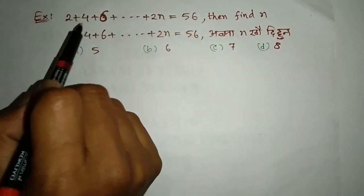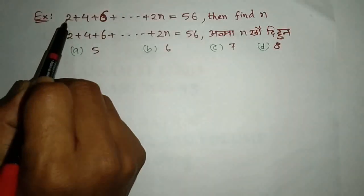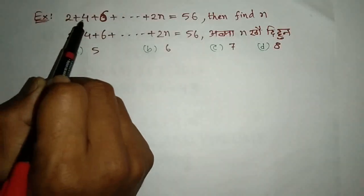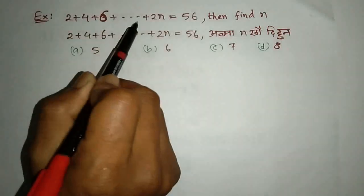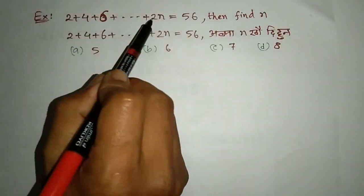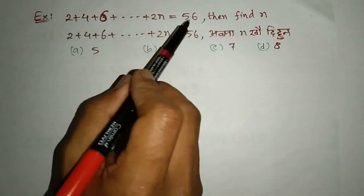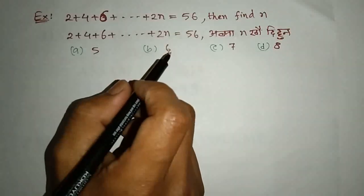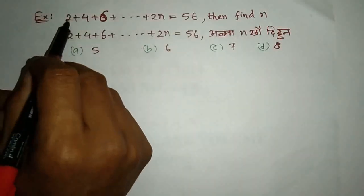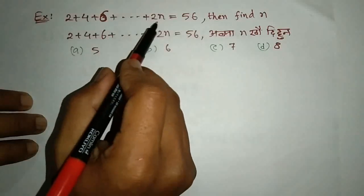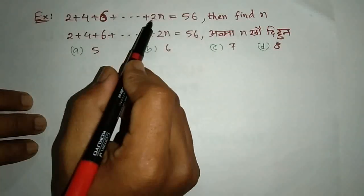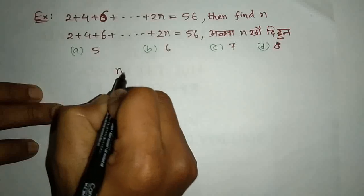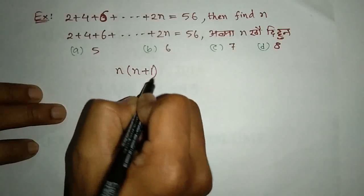Now we're going to make 4 plus n. This is the formula n plus size, so we're going to make 4 into 2 into the double index. Next we're going to get the formula n plus n plus n, so n plus 1 into the double index.